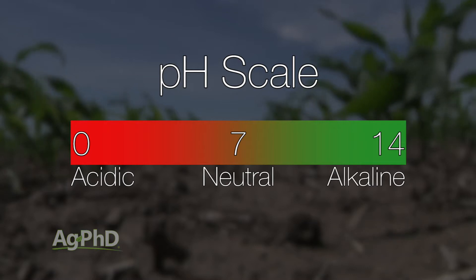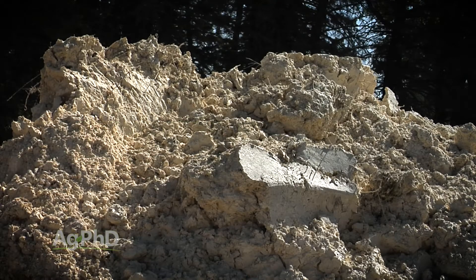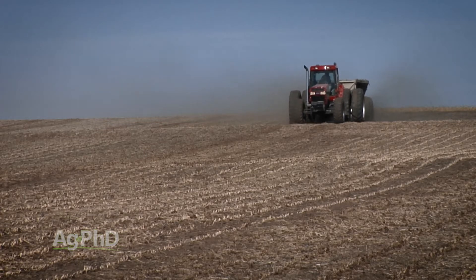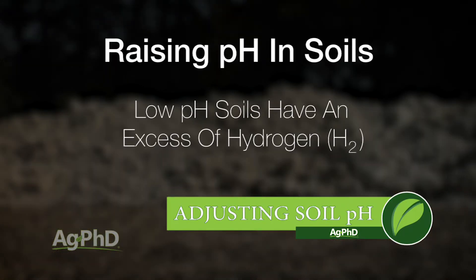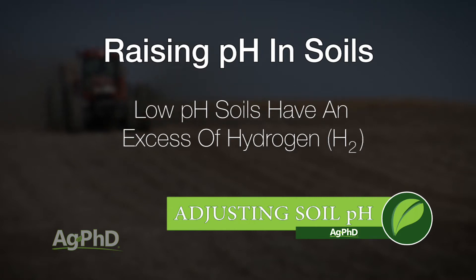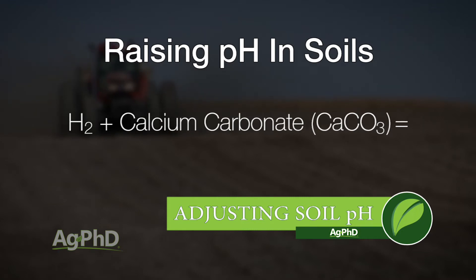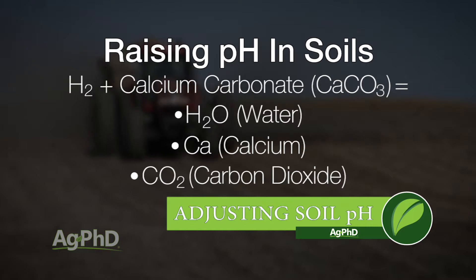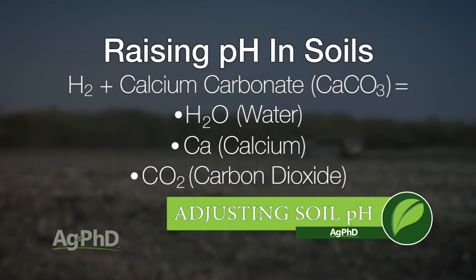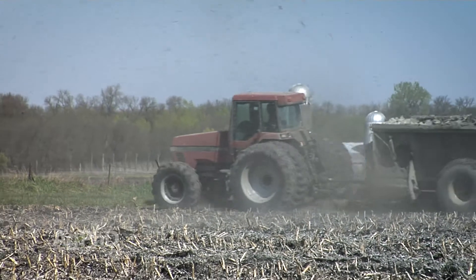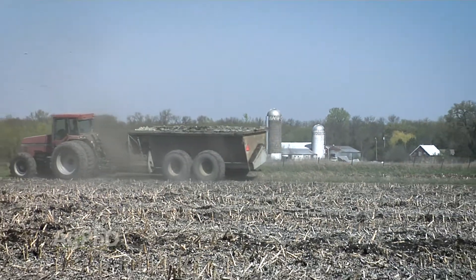With soil pH, if it's not ideal it's either going to be high or low. Let's look at the low side first. There's a pretty easy fix: you just add calcium carbonate, or lime. There's a chemical reaction that happens when you've got low pH soil and you add calcium carbonate (CaCO3) to it. In low pH soil you have an excess of hydrogen (H2). When you add those two things together you end up with several byproducts: one being H2O — water. The hydrogen pulls one of the oxygens off that calcium carbonate molecule and you make water. Then you're left with free calcium for your soil, which is a good thing, and you're left with carbon dioxide which your plants breathe in. So you've got three positive outcomes from adding lime to a low pH soil, and the big thing is now your pH can move back up to neutral.